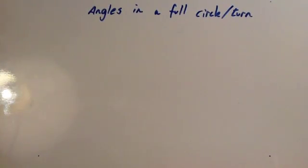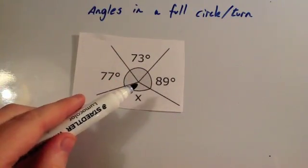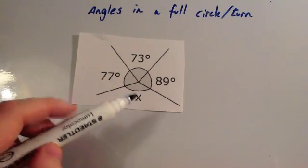A typical question would be, they would give you some angles and you'll see that they'll meet at a point and make a full circle and they'll ask you to find a missing one.